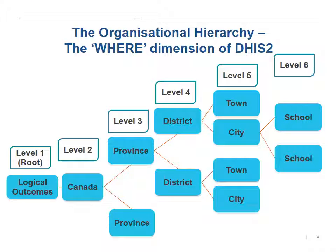Here we have an example of Canada broken into provinces — obviously there are more than just two — and the provinces broken into districts, and then cities and towns inside of those, going lower and lower. We're specifically focused on schools for this one. The key questions are: where are you collecting the data, and how do you aggregate or disaggregate it geographically? Based on your answers, you would create a structure similar to this.